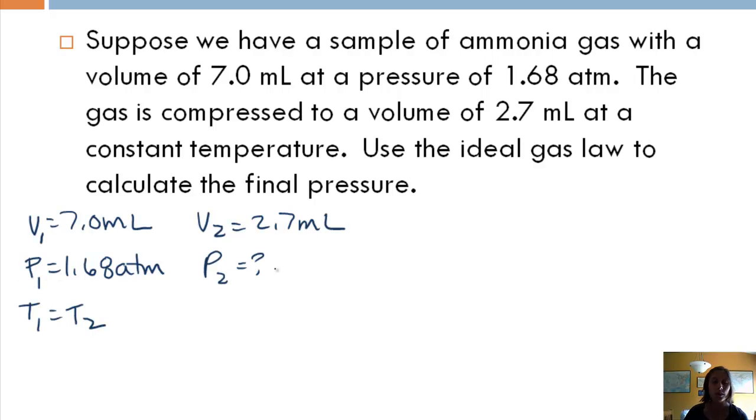R is a constant, so I know it's not going to change from initial conditions to final conditions, so I'm going to cancel it out. We also said that temperature was constant, and I'm going to assume that the number of moles is constant also. So this just leaves me with P times V. Well, this gives me the relationship P1V1 equals P2V2.